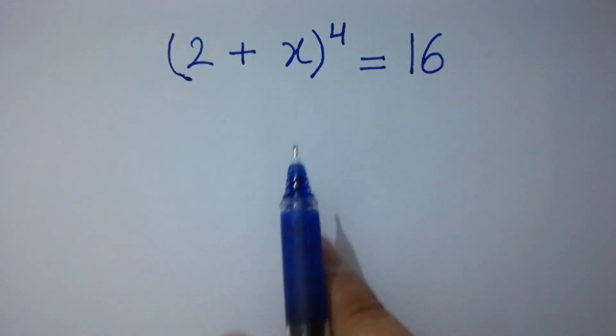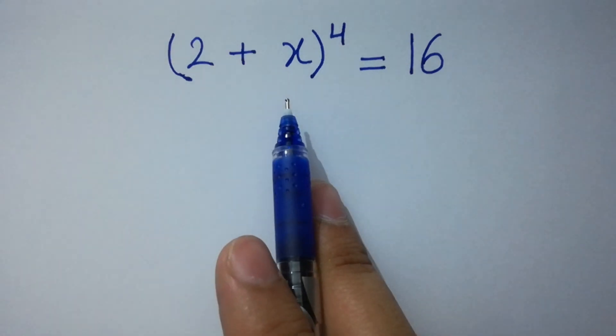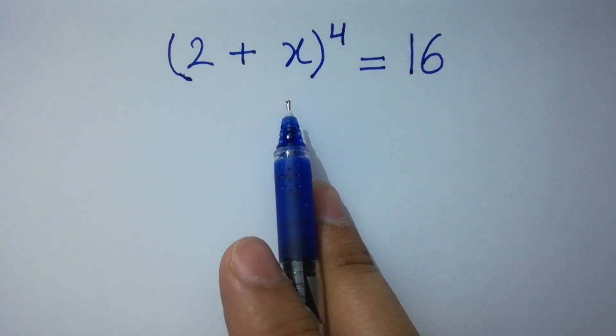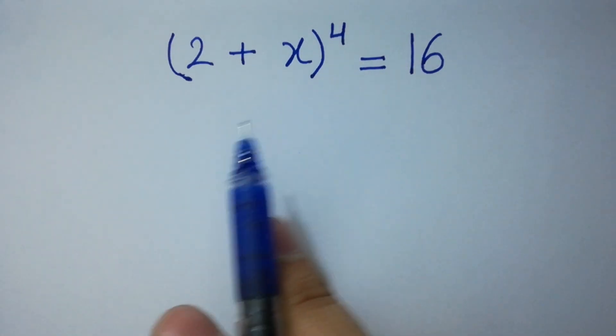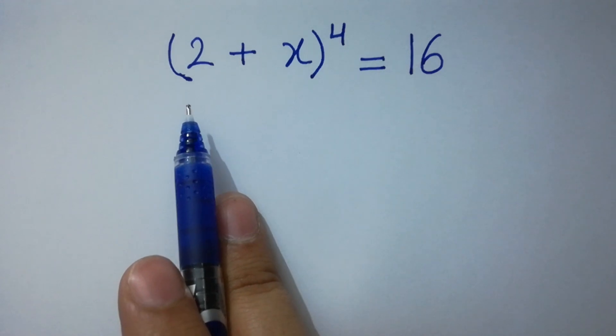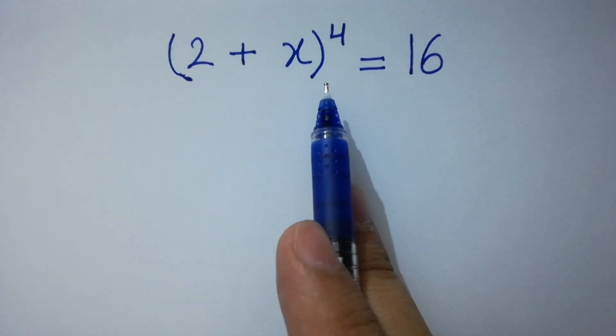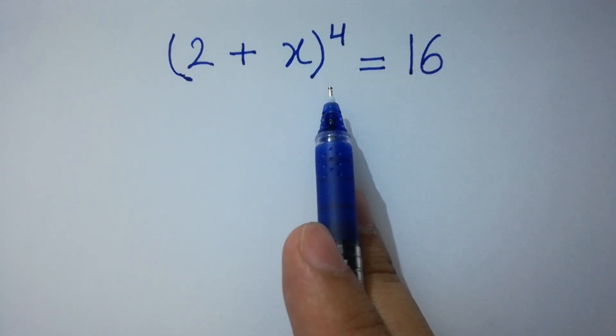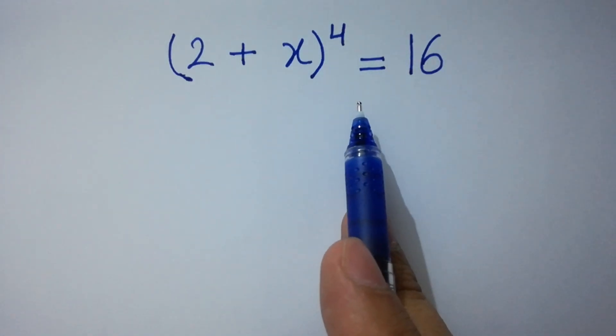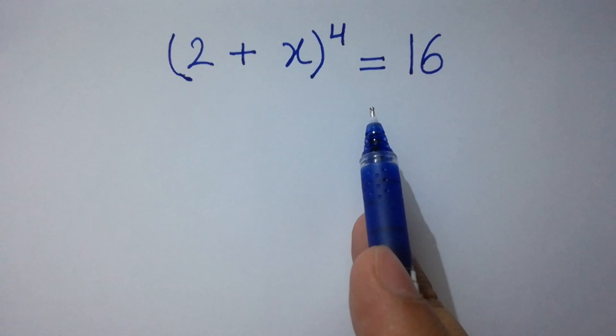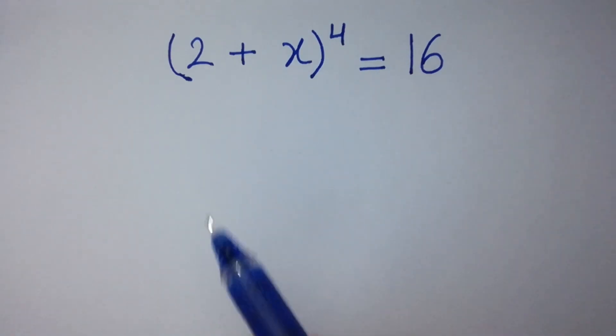Hello friends, find the value of x if (2 + x) to the whole power 4 equals 16. Let's have a solution.